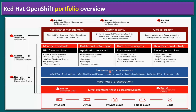Before understanding ACM further, let's have a quick recap of the Red Hat OpenShift portfolio overview. Red Hat OpenShift Kubernetes Engine can run on physical, virtualization, private cloud, public cloud, and edge environments. The base OS can be either Red Hat Enterprise Linux or Red Hat Enterprise Linux CoreOS. With the OpenShift Container Platform license you get additional benefits like managing workloads, building cloud-native apps, data-driven insights, and developer productivity. The next tier is OpenShift Platform Plus, and one of its key features is Red Hat Advanced Cluster Management, with capabilities including observability, discovery, policy compliance, configuration, and workloads.